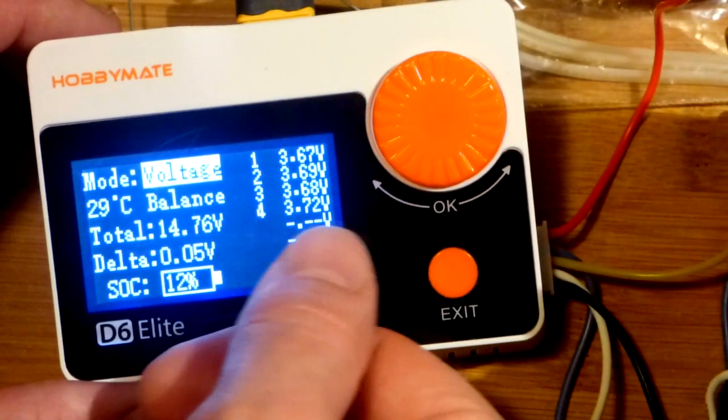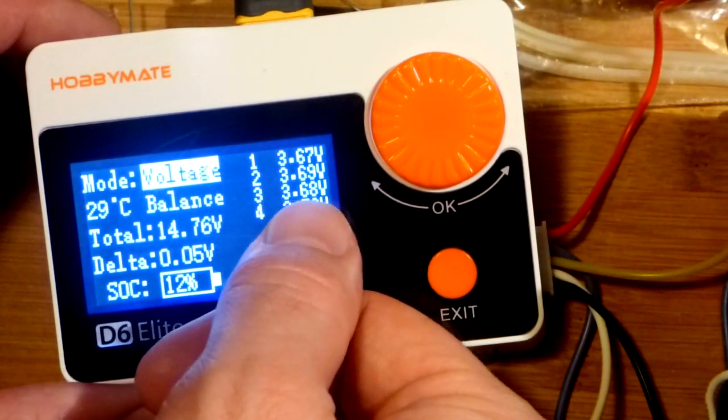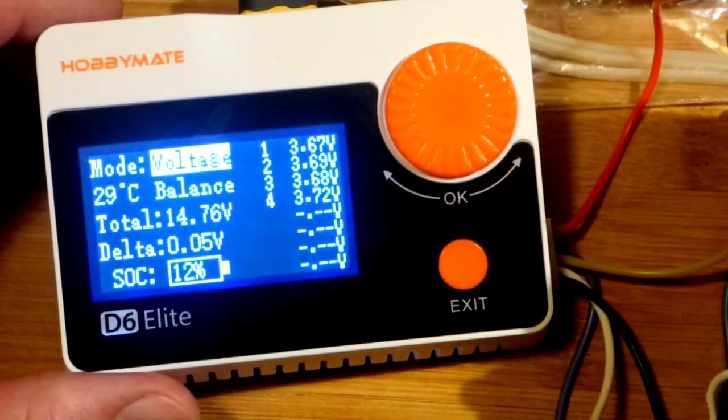So each one of the parallel batteries in that series connection, so they have their positive and their negative terminals connected directly to each other. Each one in that area has 3.72 volts. That one has 3.68 volts. That has 3.69. And that one has 3.67. So that's what this is doing.